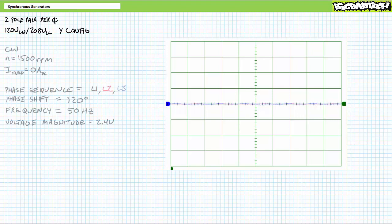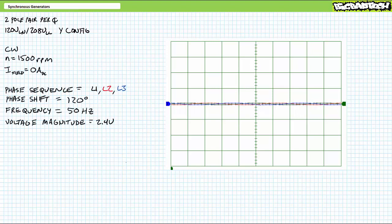Let's put this thing to work. When an external prime mover starts turning the rotor at 1,500 RPM and no field excitation current, we observe something that might at first seem unexpected. You got to look close, but the stator windings are experiencing a tiny amount of AC voltage on the order of 2.4 volts RMS, even though there is no electromagnet on the rotor. Why is this happening?